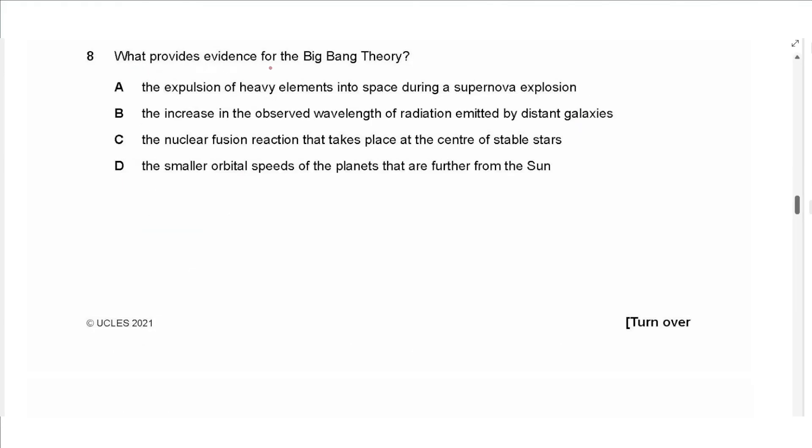The next question says, what provides evidence for the Big Bang Theory? The expulsion of heavy elements into space during a supernova explosion? No. The increase in the observed wavelength of radiation emitted by distant galaxies? The increase in wavelength means a lower frequency. That is called a red shift. So actually, this is the answer. The nuclear fusion reaction at the center of a stable star is not the evidence for the Big Bang Theory. The smaller orbital speeds of the planets that are further from the sun means that the gravitational pull gets weaker as distance increases. It's not related to the Big Bang Theory. So the answer is B.